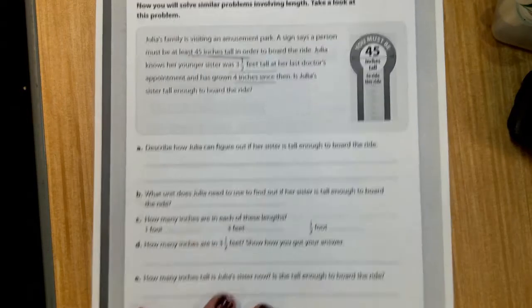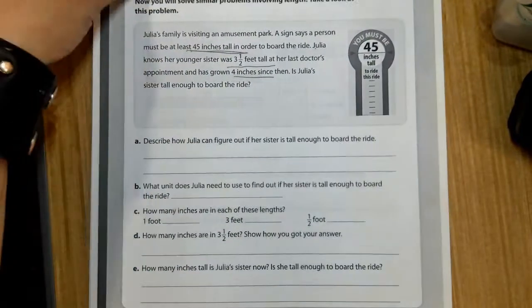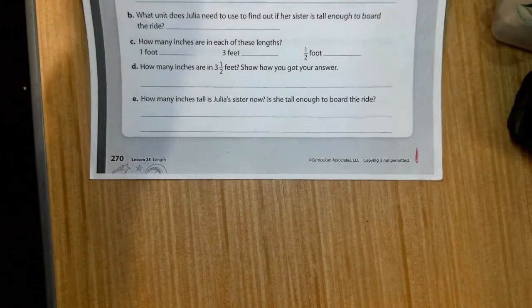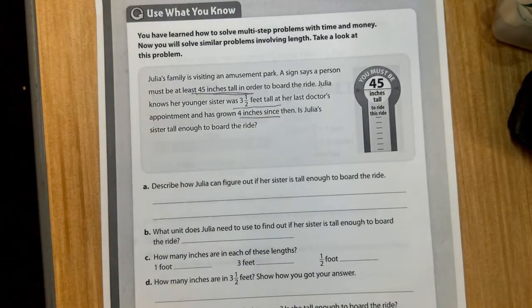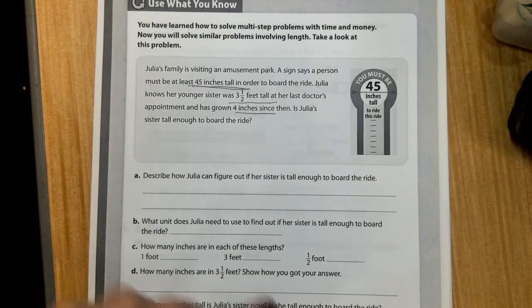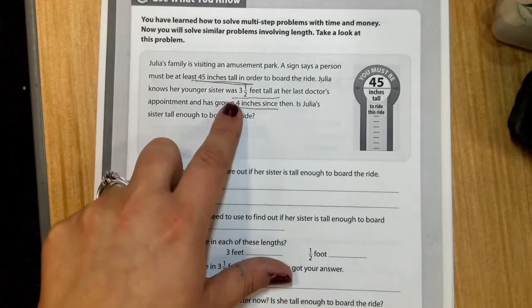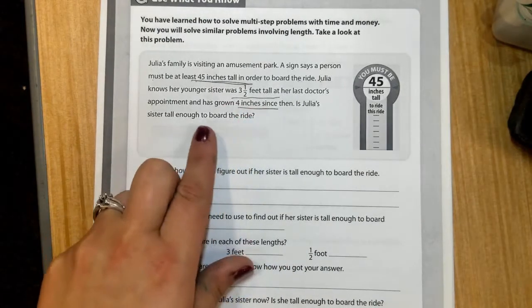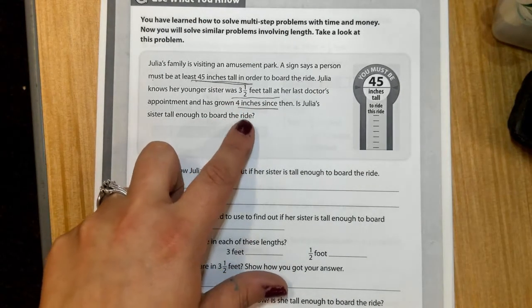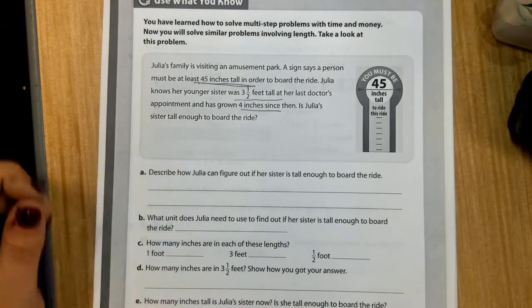Alright, so we're in our instructional books on lesson 25, length, page 270. We're looking at Julia. Her family is visiting an amusement park. A sign says a person must be at least 45 inches tall in order to board the ride. Julia knows her younger sister was three and a half feet tall at her last doctor's appointment and has grown four inches since then. Is Julia's sister tall enough to board the ride?